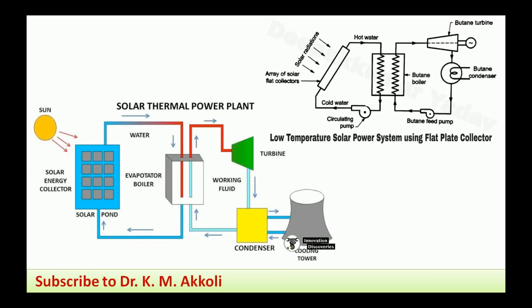The next type is the solar thermal power plant. Solar thermal power plant means we utilize the heat energy from the sun for power generation, similar to thermal power stations. In a solar thermal power plant, water is heated using a solar pond or concentrated collectors — the same way we heat water for domestic water heating purposes.